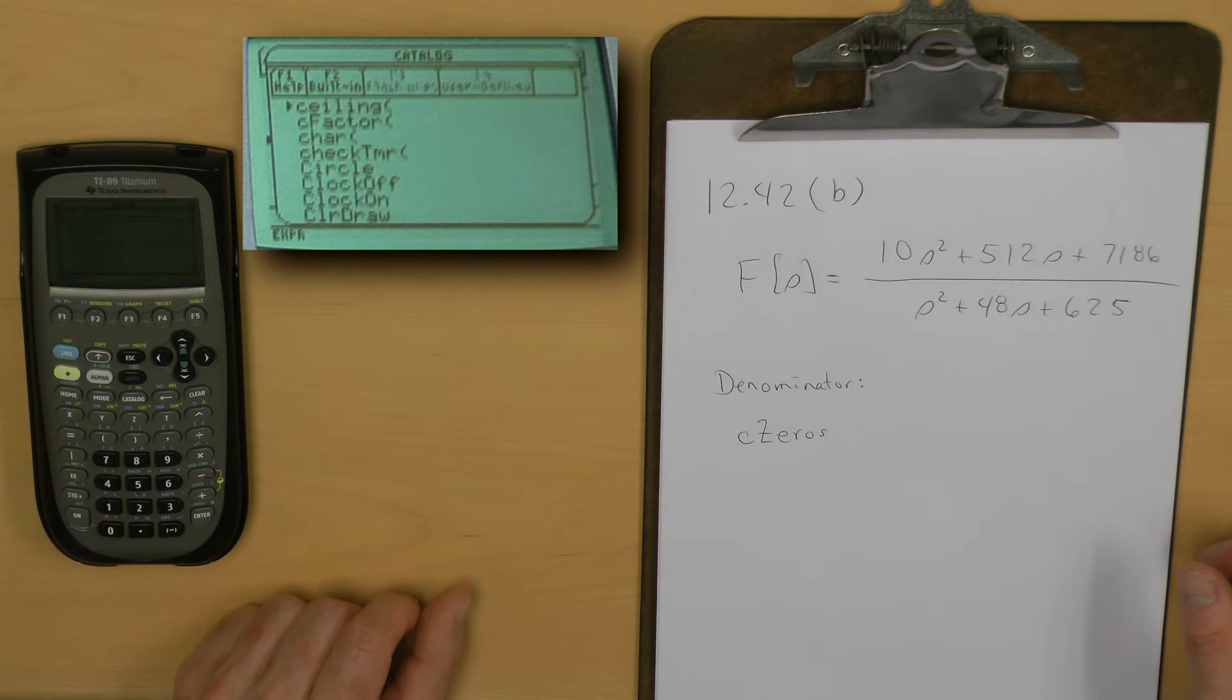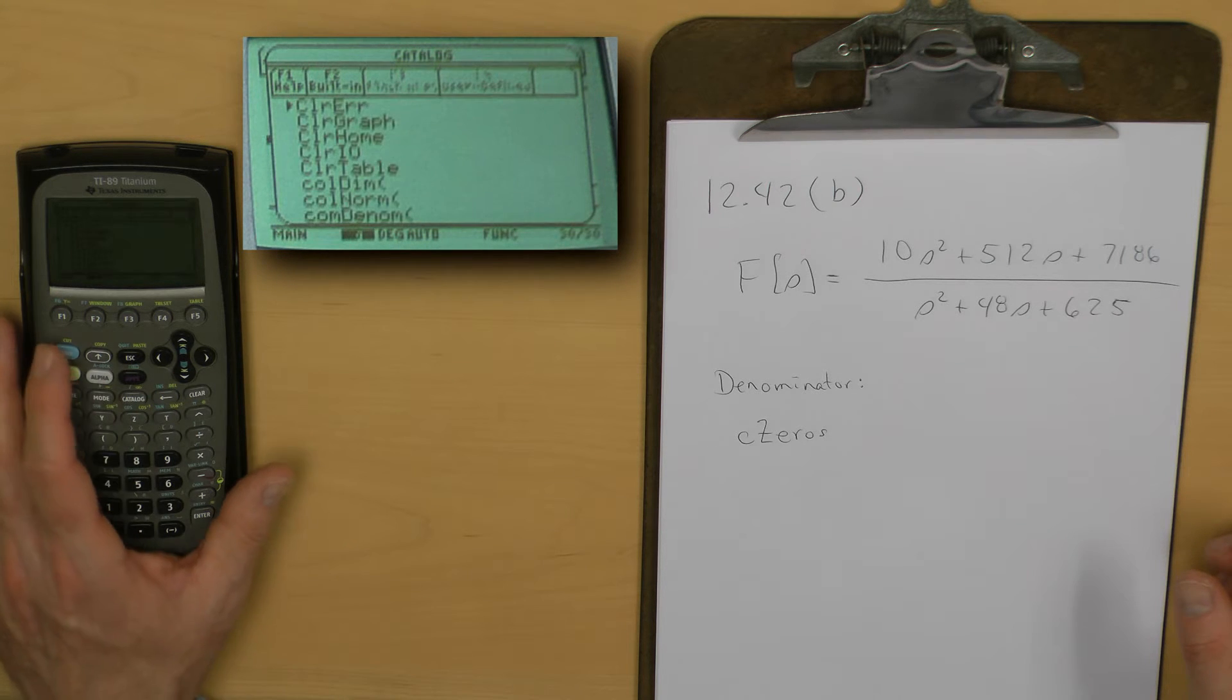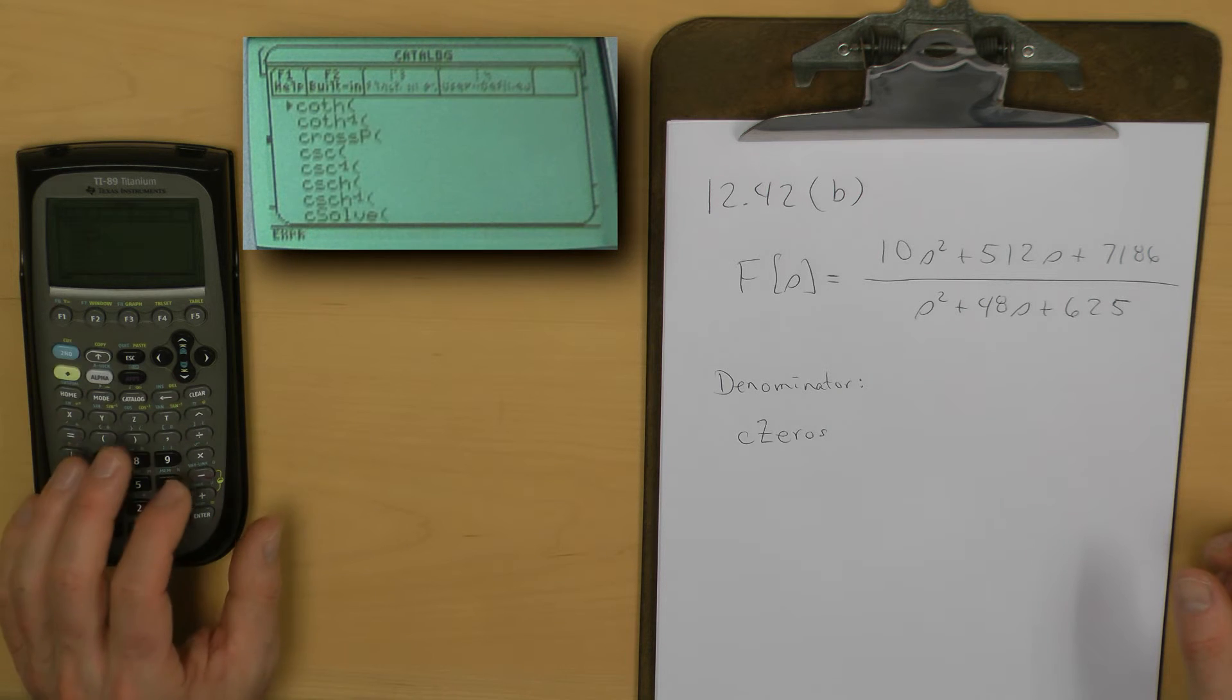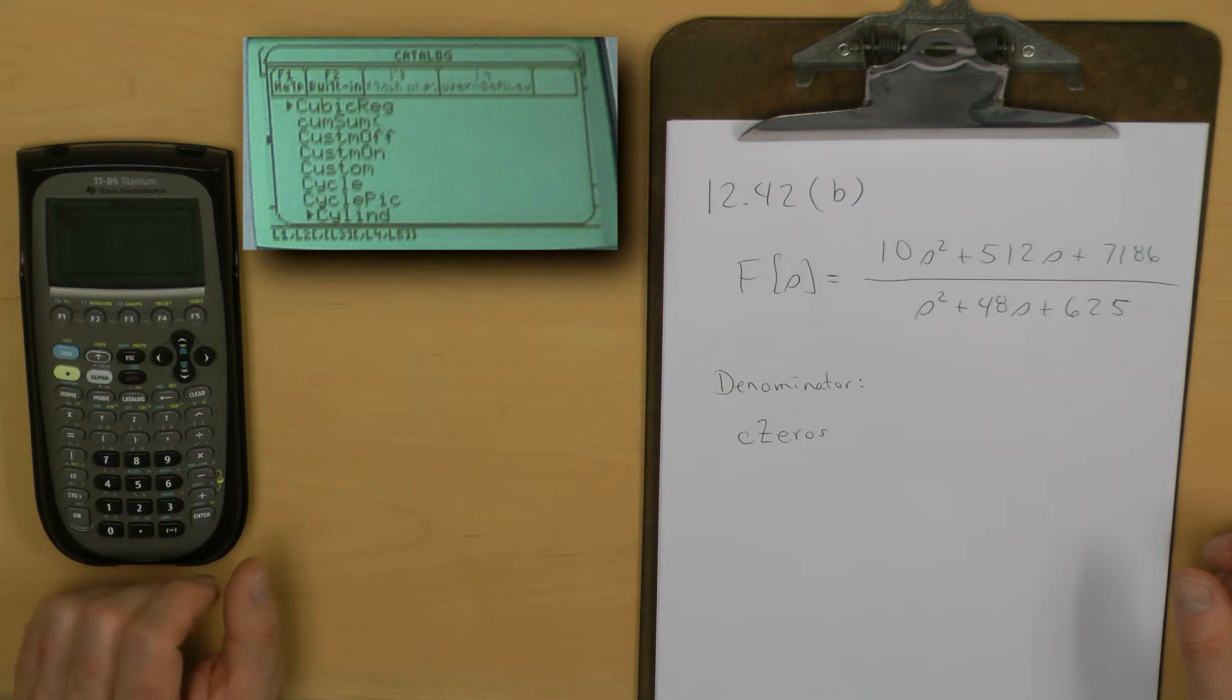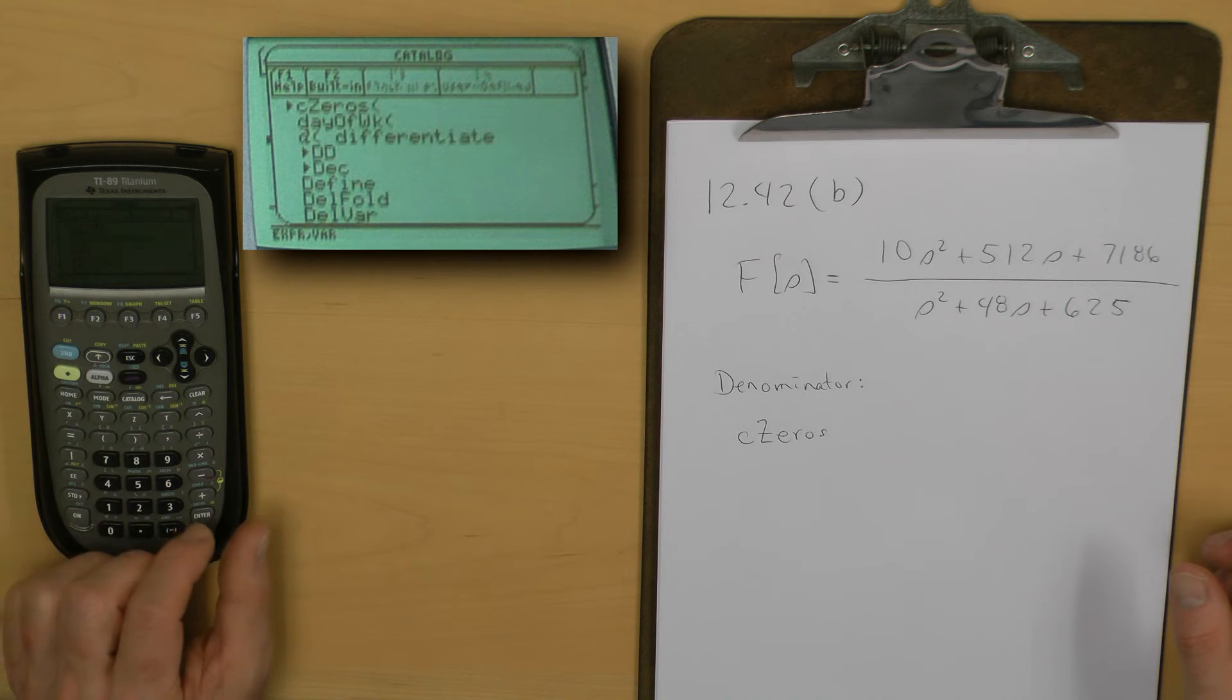Now I'm on ceiling, but what I want to do is go down to complex zeros. Let me go down a few commands, or screens, and I've now found the function complex zeros.